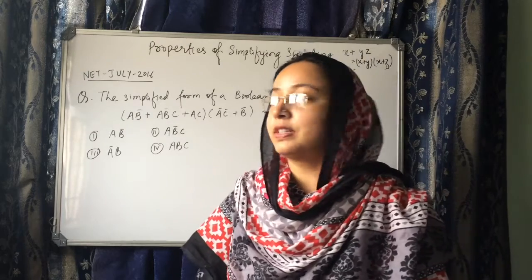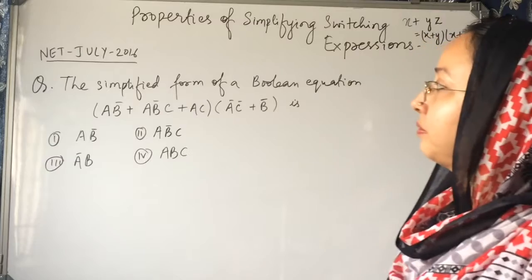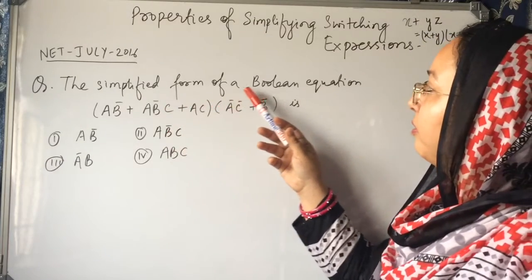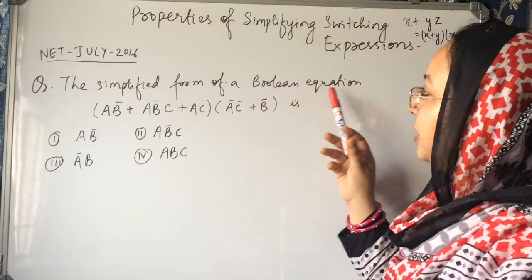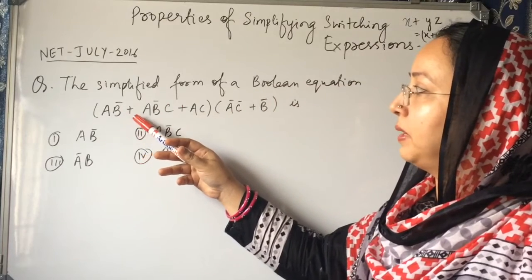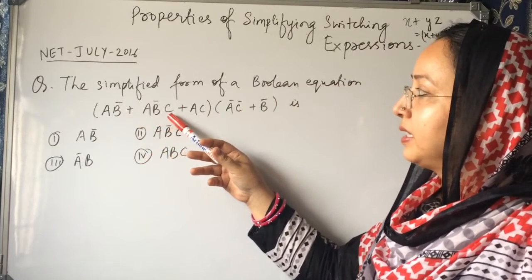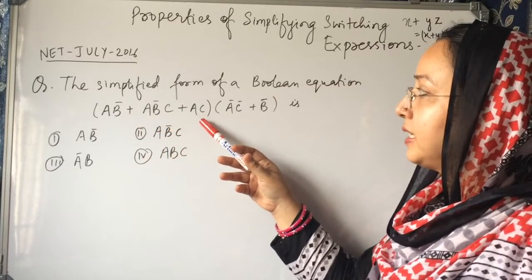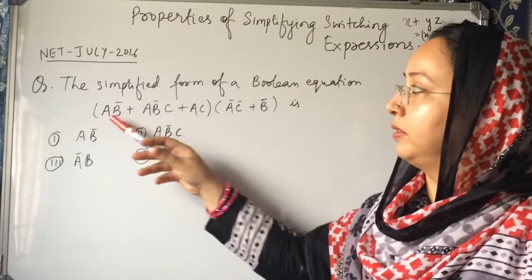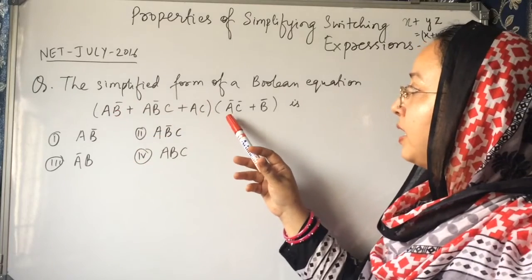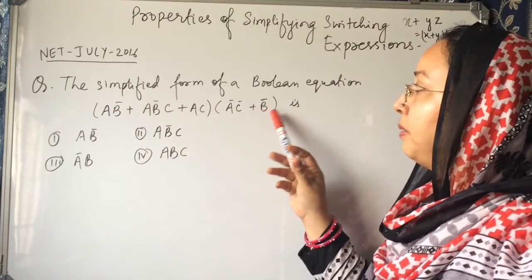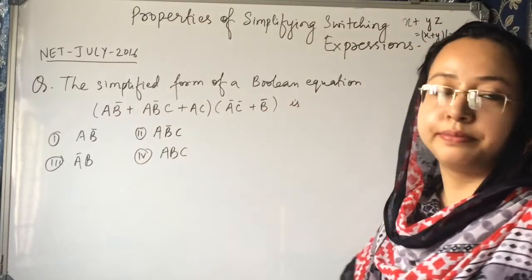The question was: find the simplified form of the Boolean expression ab̄ + ab̄c + ac, multiplied by (āc̄ + b̄).